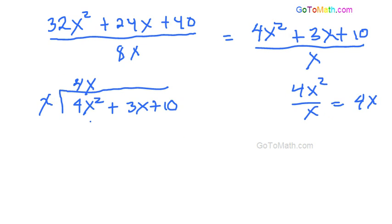So we're going to write 4x up here. And then what you want to do is multiply the 4x times the x. And so we end up with 4x squared. Let's draw a horizontal line. Then we take their difference and we get 0. But then just carry down the 3x plus 10.